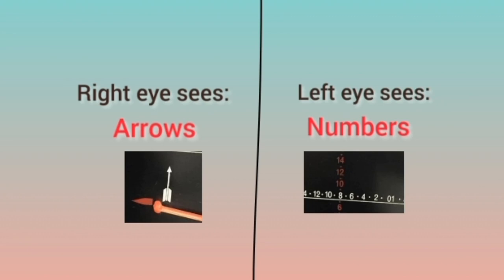Both eyes see two dissimilar objects. The right eye sees arrows — white arrows for horizontal deviation and red arrows for vertical deviation. The left eye sees the numbers. The white scale is for horizontal deviation measurement and the red scale is for vertical deviation measurement. When fusion is broken, the patient sees the arrow move, and then the arrow becomes superimposed or aligned with a number on the scale — that is the reading the patient reports.